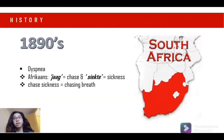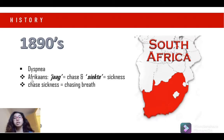So now let us learn its history. JSRV was recognized during the 1890s in South Africa, where herds of sheep experienced dyspnea. Hence, the name of the virus was called Jaagsiekte, because in Afrikaans, 'jaag' means chase and 'siekte' means sickness. When combined, it refers to the chasing sickness that sheep experience when breathing heavily under respiratory distress.